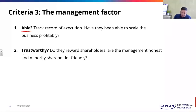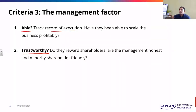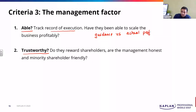What do we basically mean by the management being able? One way to check is their track record of execution. Have they been able to stick to their guidance? Most companies come up with guidance — yeah, next year we might reach here, after that we might reach here. So basically you're checking their execution capability. How you could do that is check guidance versus actual performance. You could look at a lot of operational metrics also. The company says we will grow at 8% in terms of the number of stores — does the company do it? These are ways to check whether the management team is able.